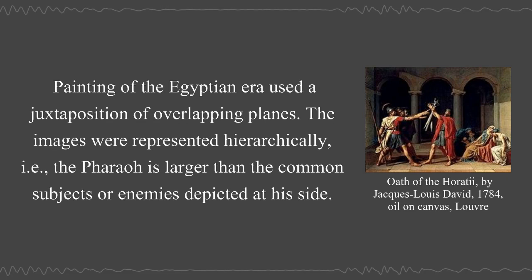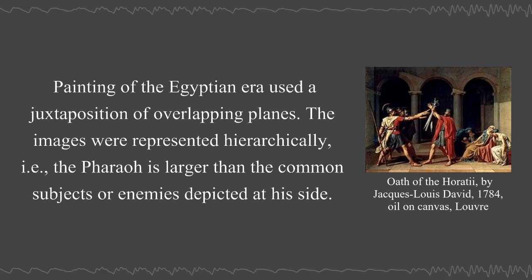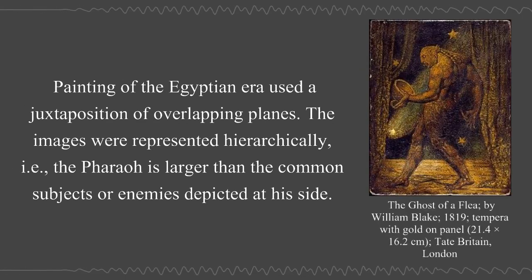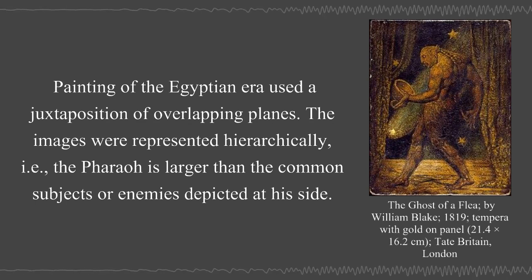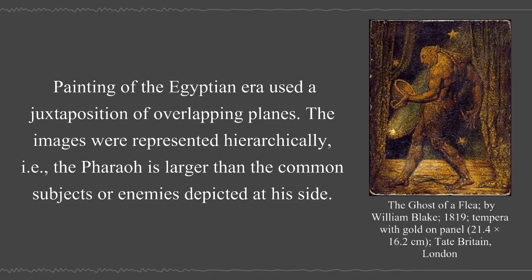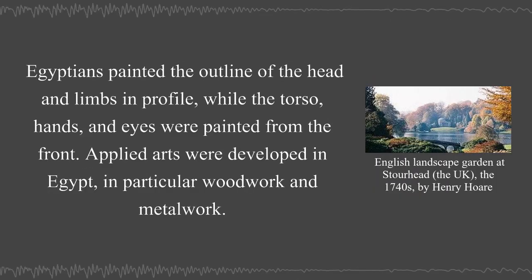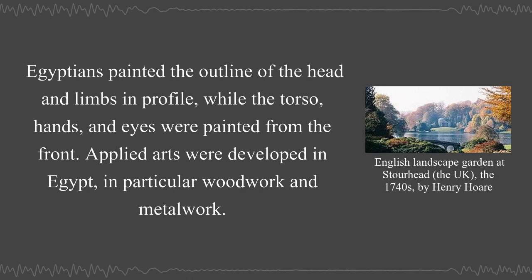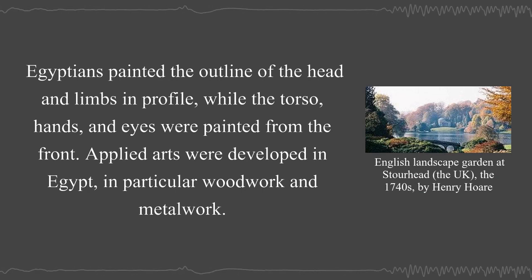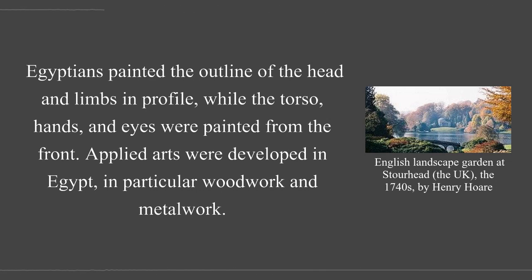Painting of the Egyptian era used a juxtaposition of overlapping planes. The images were represented hierarchically. The pharaoh is larger than the common subjects or enemies depicted at his side. Egyptians painted the outline of the head and limbs in profile, while the torso, hands, and eyes were painted from the front. Applied arts were developed in Egypt, in particular woodwork and metalwork.